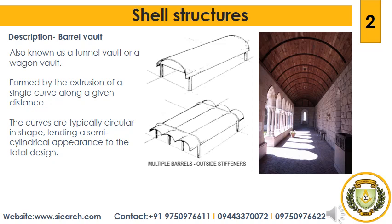The simplest kind of Vault is a Barrel Vault, also called a Wagon or a Tunnel Vault, which is generally semi-circular in shape. The Barrel Vault is a continuous arch, the length being greater than its diameter. As in building an arch, a temporary support is needed while rings of voussoirs are constructed and placed in position, until the topmost voussoir — the keystone — is positioned, at which point the vault becomes self-supporting.